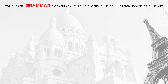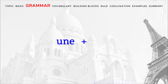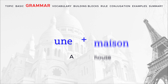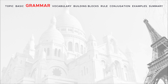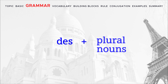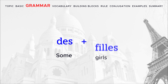The second form is 'Une,' used with the feminine singular noun. The third form is 'Des,' used with the plural nouns, no matter what the gender is. For example: Des garçons, Des filles, Des livres.